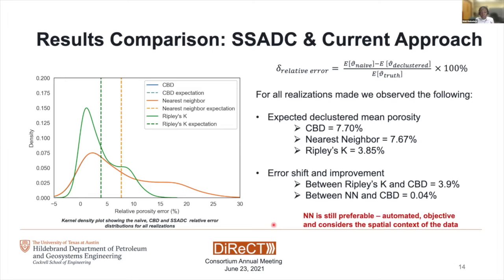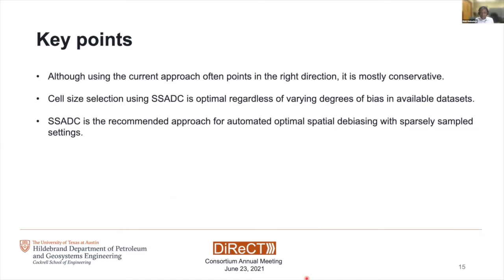Looking at the key summary points: although the current approach often points in the right direction, it's mostly conservative. Cell size selection in SSA-DC is optimal regardless of varying degrees of bias in the data set and is recommended for optimal spatial bias correction, especially in sparsely sampled settings. The next steps to further this work will be to develop a new locally adaptive declustering method to work with data sets from non-stationary population densities, which should be achievable using Cox processes.